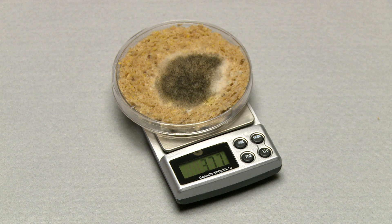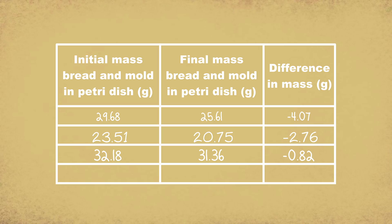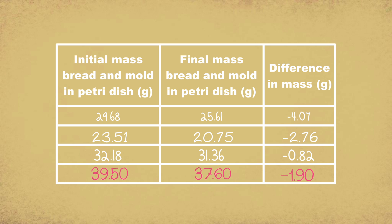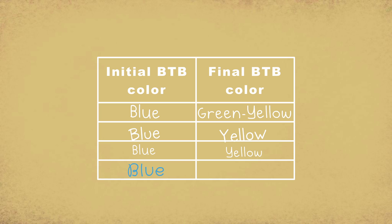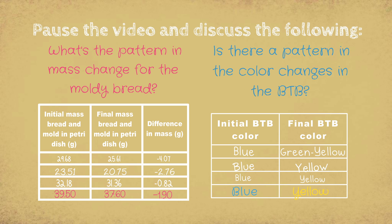Now it's time to weigh our bread now that we've got plenty of moldiness. Here are our mass changes: we started with 39.5 grams of bread, and now we're down to 37.6 — that's a loss of 1.9 grams. And the BtB changed from blue to yellow. This is very similar to the results from the sample data from another classroom.